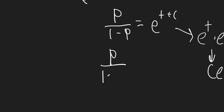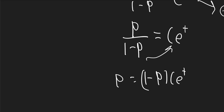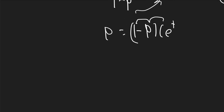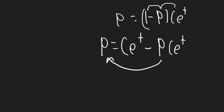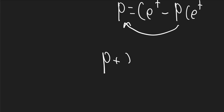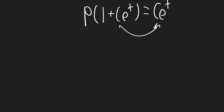So p over (1 - p) = Ce^t. Multiplying the denominator to the other side: p = (1 - p) × Ce^t. Distributing: p = Ce^t - p·Ce^t. Adding that to the other side: p + p·Ce^t = Ce^t. Factoring out p: p(1 + Ce^t) = Ce^t.